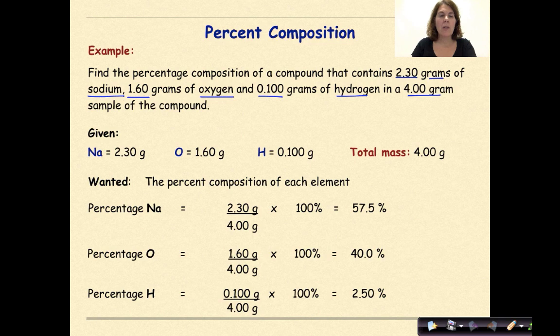So here we have our givens. Our mass of sodium, oxygen, hydrogen, and aren't they nice they gave us a total mass of 4 grams. So this would be the whole, while the other parts that were identified for us would be the part.